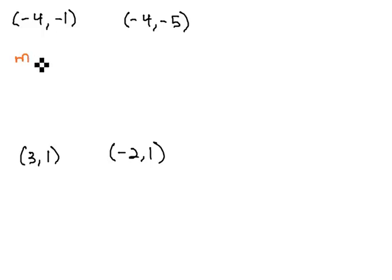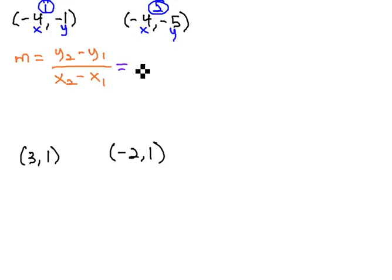We recall the slope formula is y2 minus y1 over x2 minus x1. So if we were to call this the first point and the second point, and remember that they're in order, we can plug these values into the slope formula.